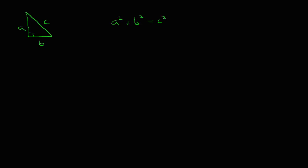What this will let us do is find the missing length of a right triangle if we have the other two.